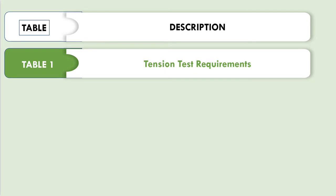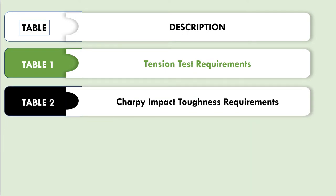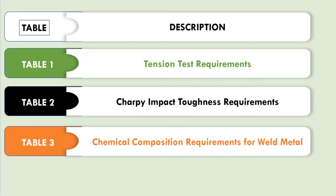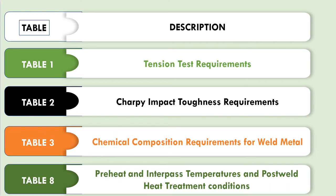Table 1 is about tension test requirements. Table 2 is about Charpy impact toughness requirements. Table 3 is about chemical composition requirements for weld metal. Table 8 is about the preheat and inter-pass temperatures and post-weld heat treatment conditions.